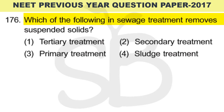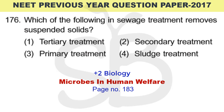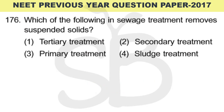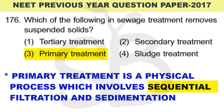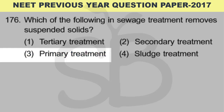Question number 176: Which of the following in sewage waste treatment removes suspended solids? This is from Plus 2 Biology, chapter Microbes in Human Welfare, page 183. The correct answer is option 3: primary treatment. Primary treatment is a physical process involving sequential filtration and sedimentation, which removes suspended solid waste.